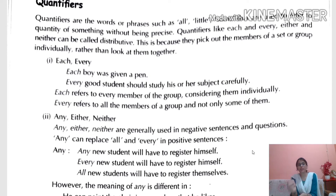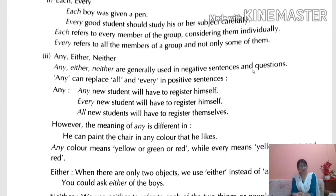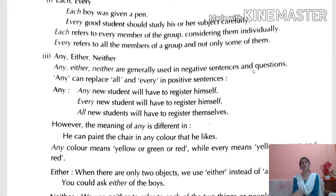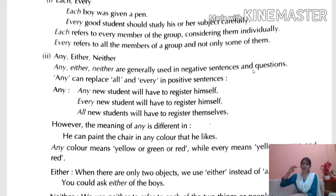There are a few quantifiers students often get confused about. First: 'each' and 'every.' 'Each boy was given a pen' — 'each' refers to every member of a group considered individually. 'Every good student should study his or her subject carefully' — 'every' refers to all the members of a group. 'Each' means individually — each one got a pen. 'Every' means the whole group as a collective.